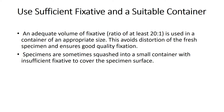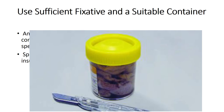Use sufficient fixative and a suitable container. An adequate volume of fixative — at least a 20:1 ratio — should be used in a container of appropriate size. This avoids distortion of the fresh specimen and ensures good quality fixation. Specimens should not be squashed into smaller containers with insufficient fixative. Sending specimens in syringes or small containers without proper fixative can result in autolysis and difficulty retrieving the specimen.